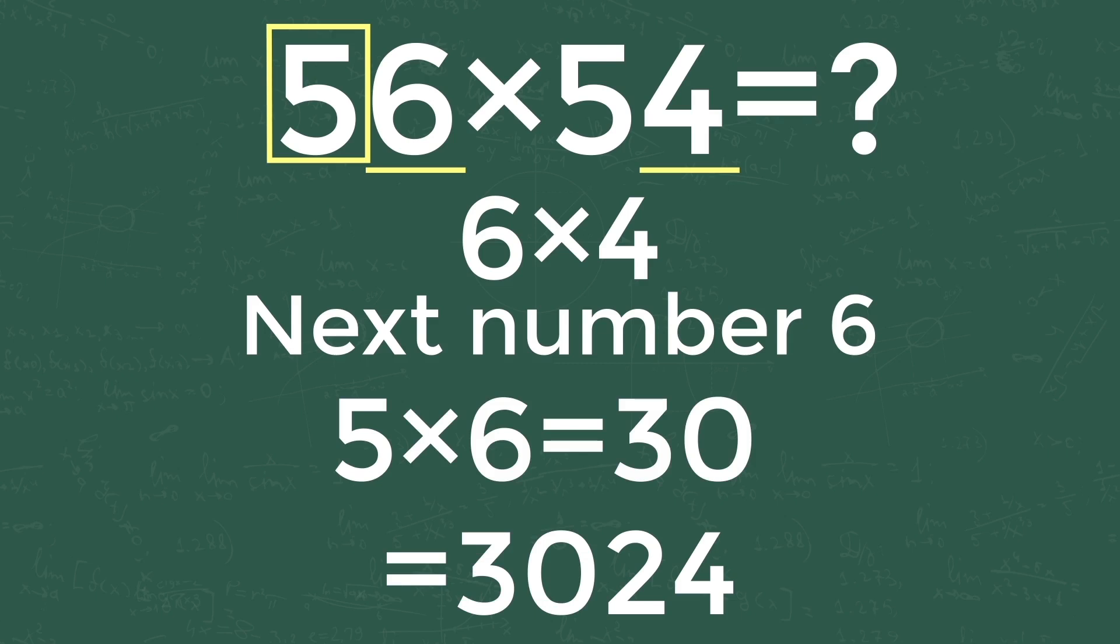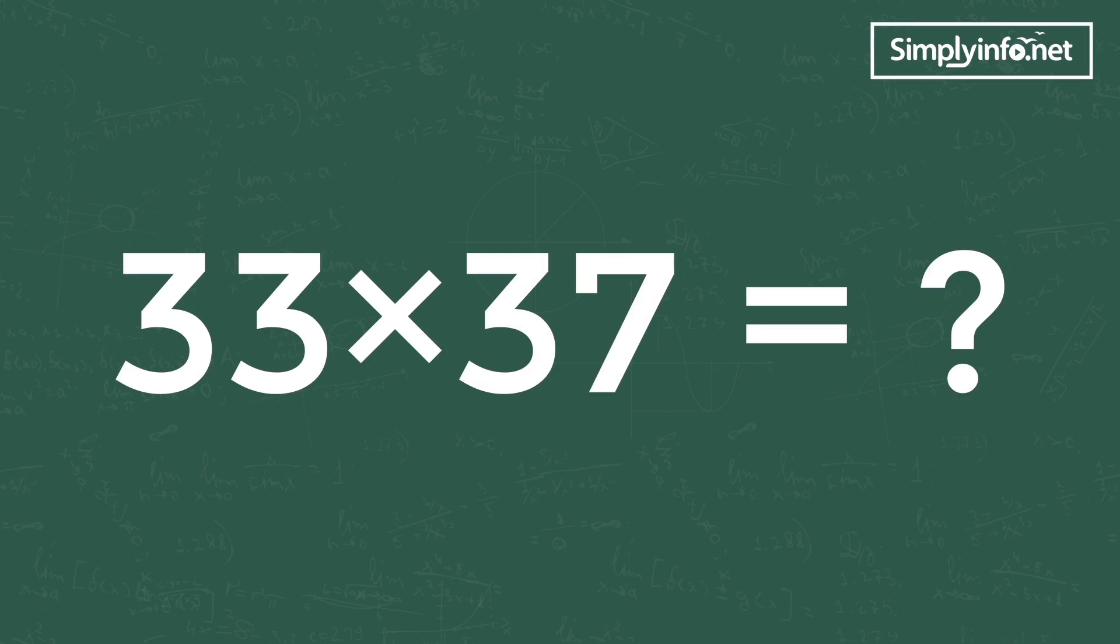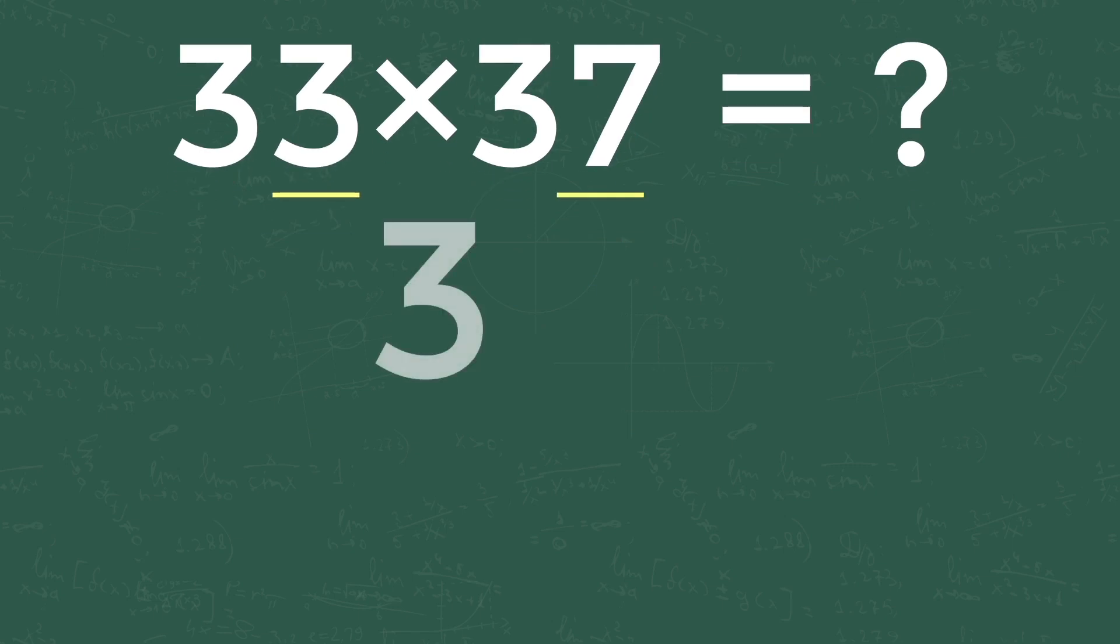Let's try another problem. 33 into 37 is equal to what? Take the ones numbers and multiply them. In our problem that is 3 into 7, that is 21. Write the number in ones and tens as shown here.